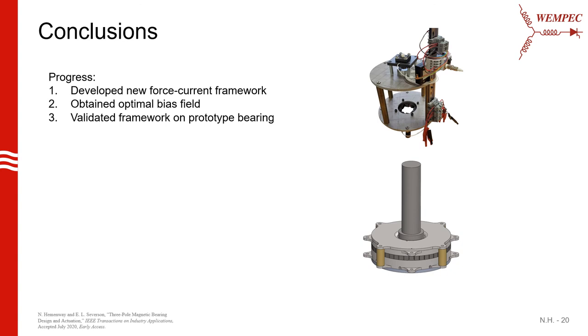So to conclude, we developed a new force current framework that allows us to determine the exact control currents needed to produce any desired force vector. We then use this to determine some fundamental insights into the three-pole bearing and obtained an optimal bias field that not only maximizes the force output of the bearing, but also decreases the ampere turn requirements compared to traditional bias fields. Finally, we validated this theory with the prototype that we've constructed in our lab. For future work, the next steps will be to actually get the rotor levitating. Once we get it levitating, to compare the linear and exact controllers again in a dynamic sense, not just a static force vector error sense. Thank you.